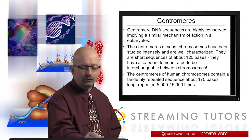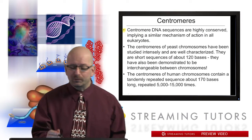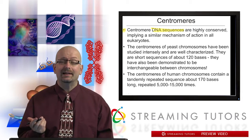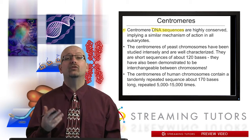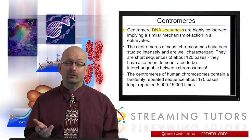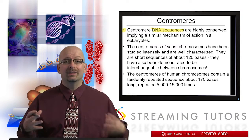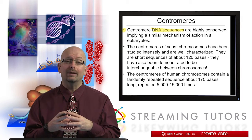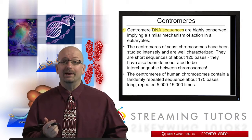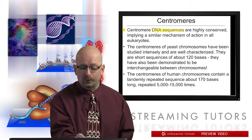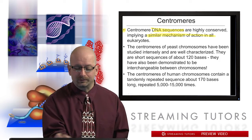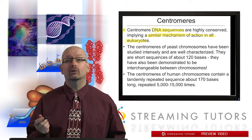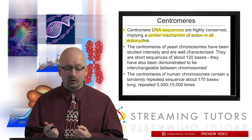Let's look at the centromeres first. Centromere DNA sequences are highly conserved — it just means that the sequences don't differ very much from one species to another, and this implies they're also constrained, meaning they play a similar role evolutionarily in many organisms. So pretty clearly, there's a similar mechanism of action in all eukaryotes.